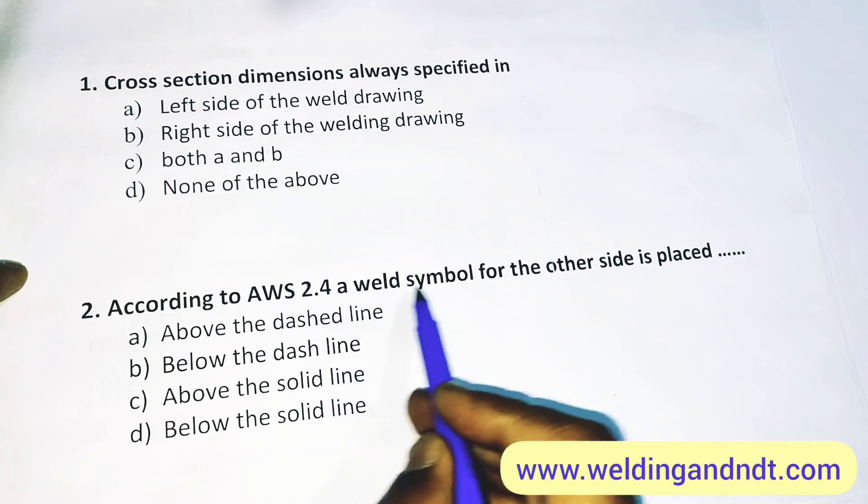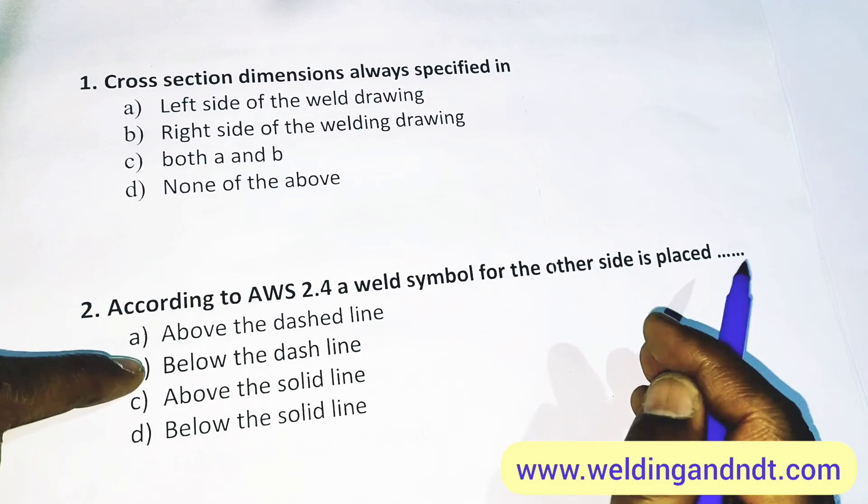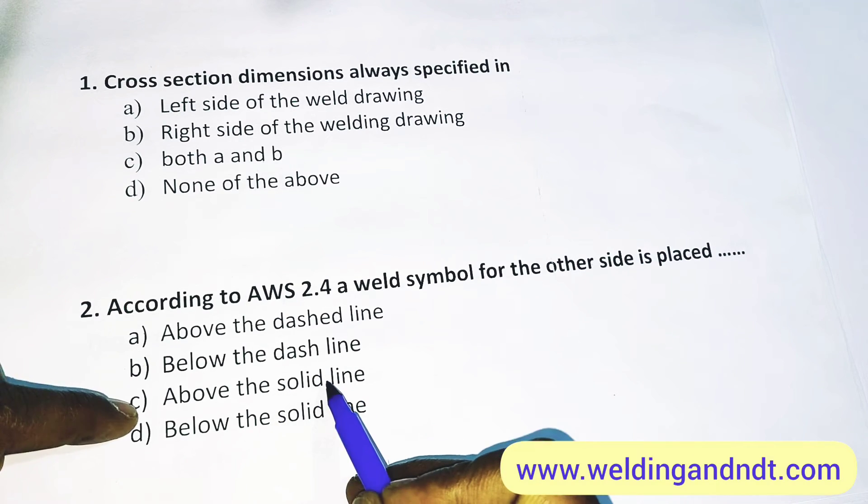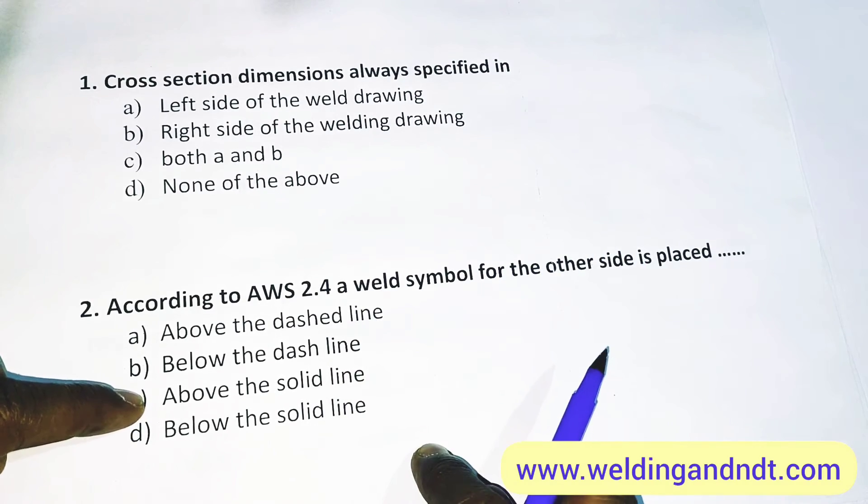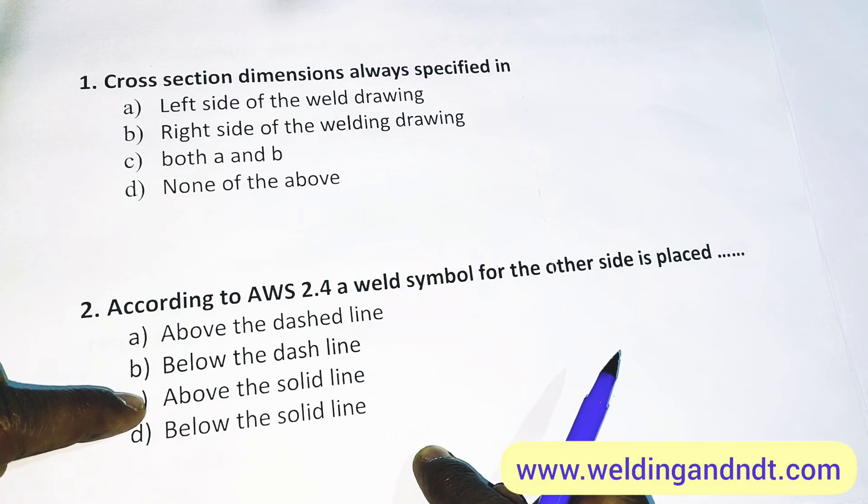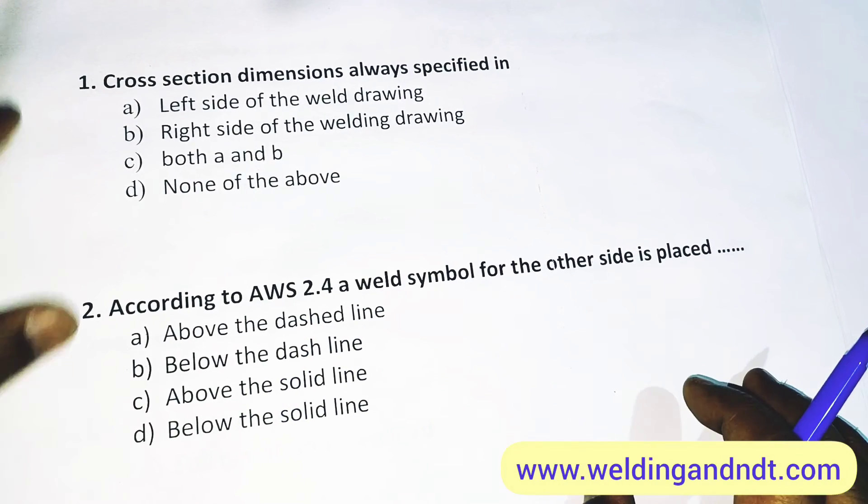Now, according to AWS 2.4, a weld symbol for the other side is placed... For other side, the weld symbol is placed above the solid line, solid reference line. Below the solid line is arrow side. So the answer will be C, above the solid line.